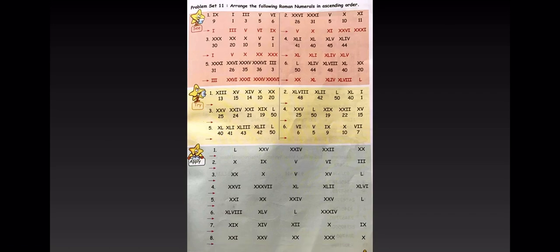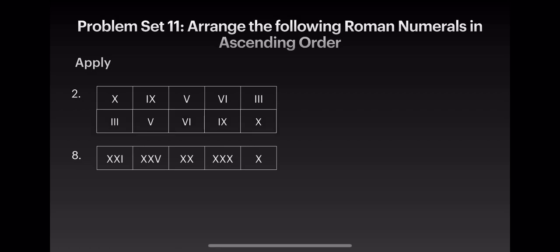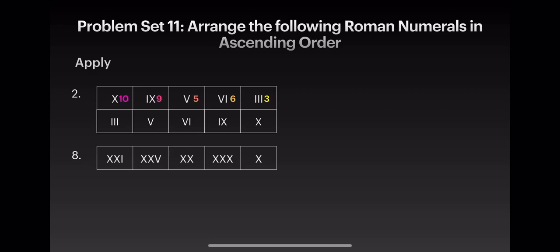Arrange the following Roman numerals in ascending order. Let us see the second sum: the given Roman numerals are XIX, V, VI, and III. Converting: X is 10, IX is 9, V is 5, VI is 6, and III is 3. Arranging them in ascending order: III, V, VI, IX, and X.